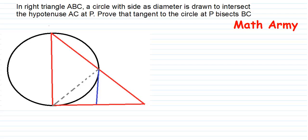Hey guys, welcome to my channel Math Army. In a right angle triangle ABC, a circle with side AB as diameter is drawn to intersect the hypotenuse AC at point P. Prove that the tangent to the circle at P bisects BC.